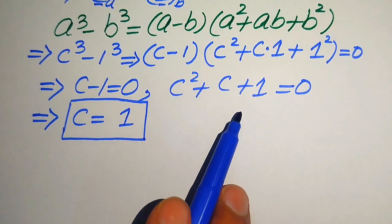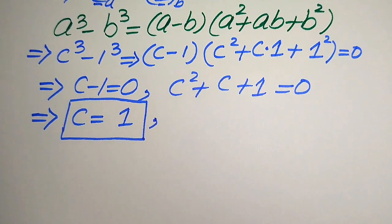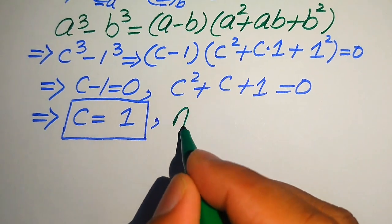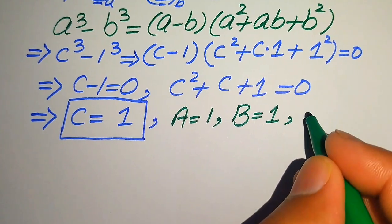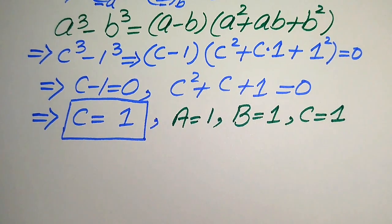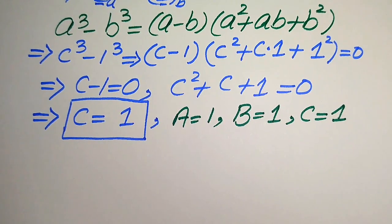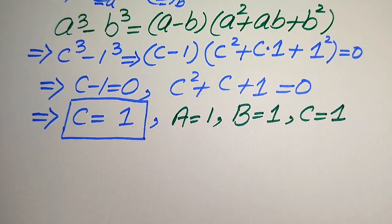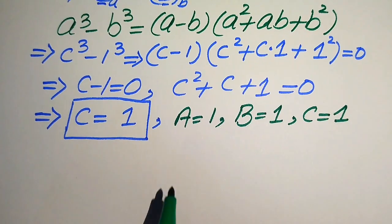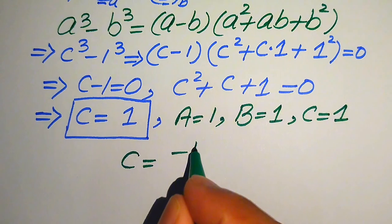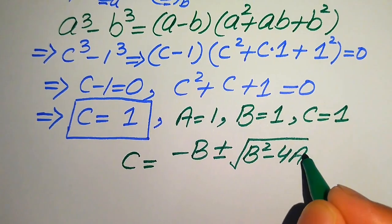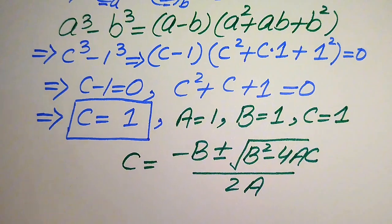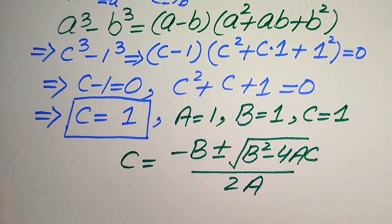To find the other solutions we need to solve the quadratic equation c squared plus c plus 1 equals to 0. We write the coefficients: capital A equals to 1, capital B equals to 1, and capital C equals to 1. We state the quadratic formula as: c equals minus B plus or minus square root of B squared minus 4AC, divided by 2A.